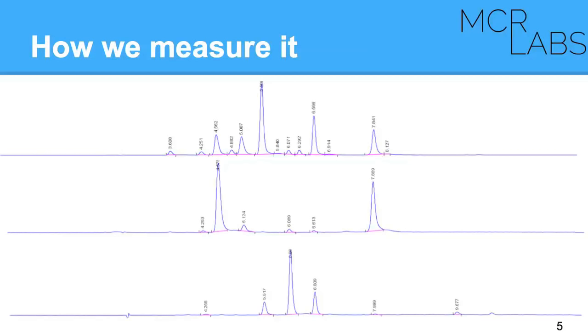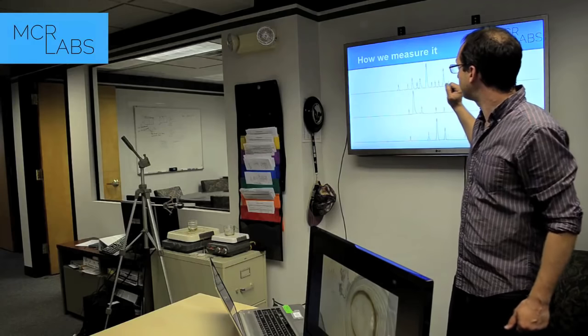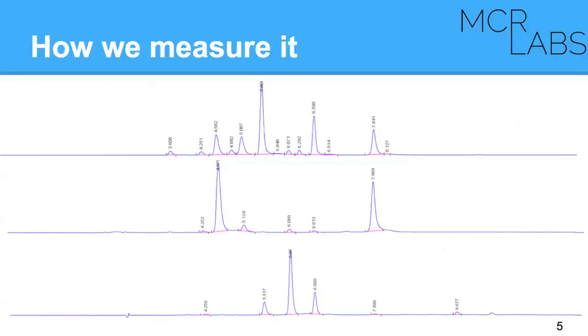This was injected yesterday. This is a vial that contains 10 different cannabinoids. That one there is CBN, this is THC, this is THCA, that's CBC, there's CBDA, there's CBD, and there's CBGA. We run a whole bunch of different cannabinoids.